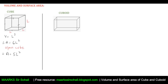To find the volume of a cuboid, the formula is length × breadth × height. This is the volume of a cuboid — this is the length, this is the breadth, and this is the height.